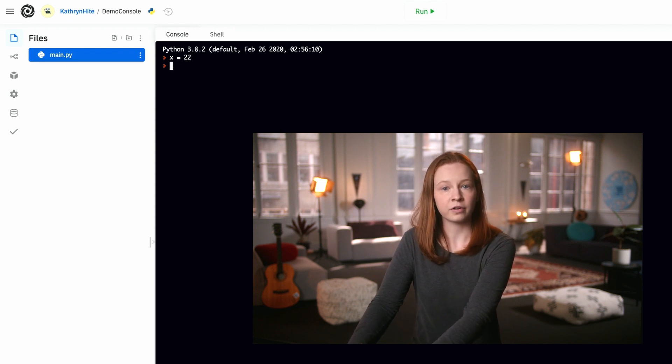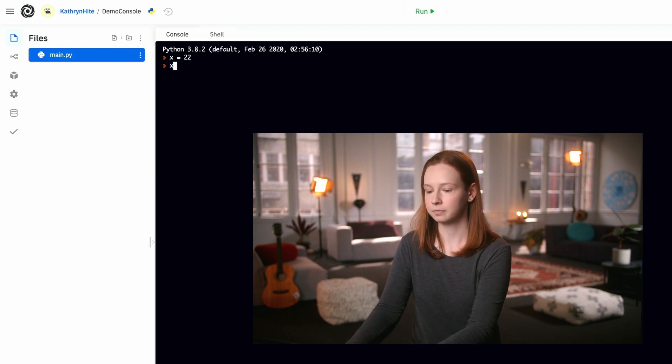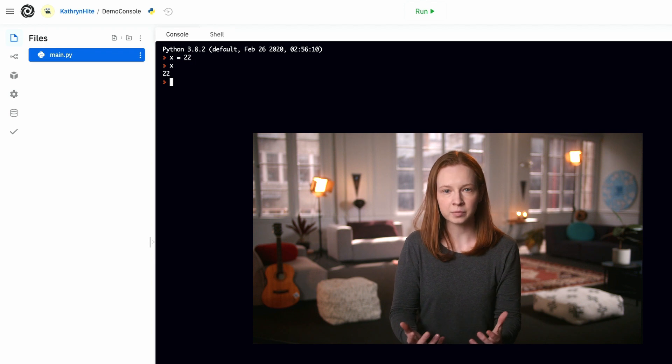To access a value that a variable is storing, we can just call that variable's name in the console. Python looks into memory for the box labeled x and opens it to give us the value 22.